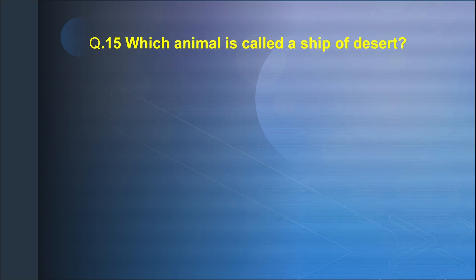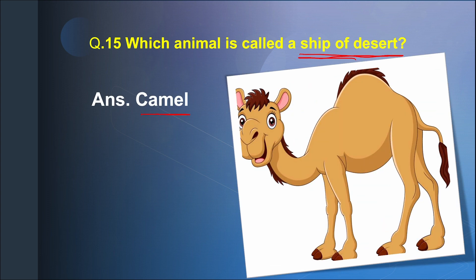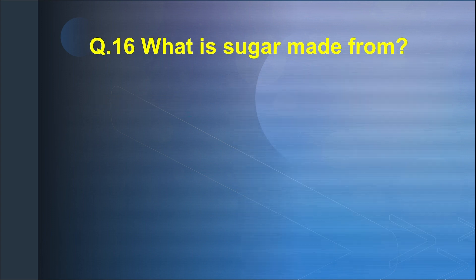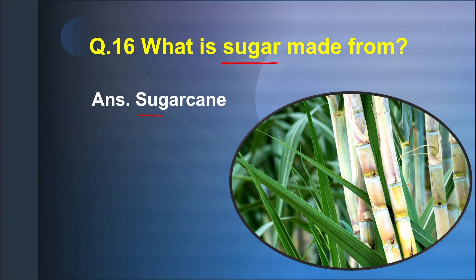Question 15. Which animal is called the ship of the desert? Answer: Camel. Question 16. What is sugar made from? Answer: Sugarcane.